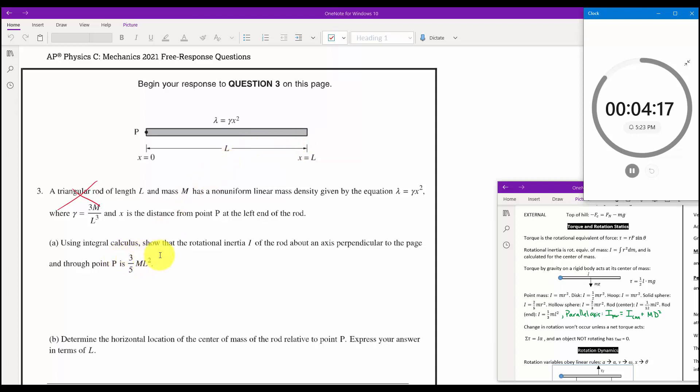Using integral calculus, show that the rotational inertia I of the rod about an axis perpendicular to the page through point P is this. So calculate rotational inertia. I don't want to do that. I know you don't want to do it. But the equation for it is right here. I is equal. Write this out. Integral of R squared DM.